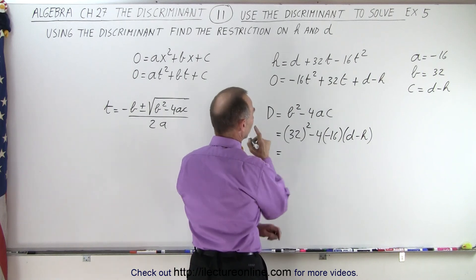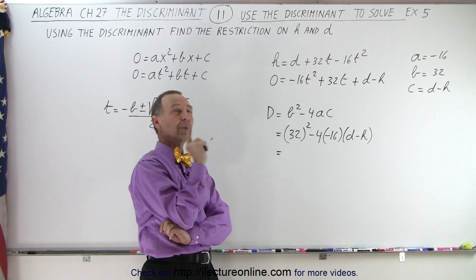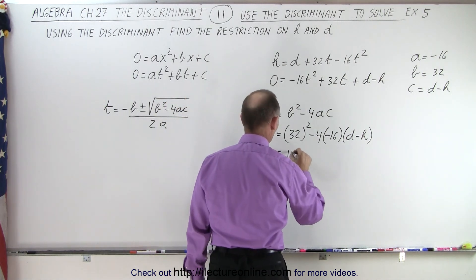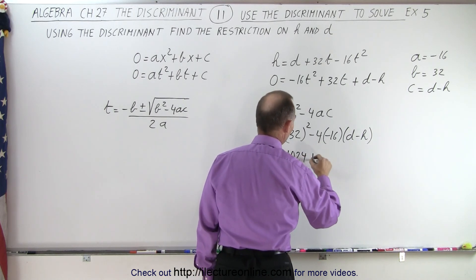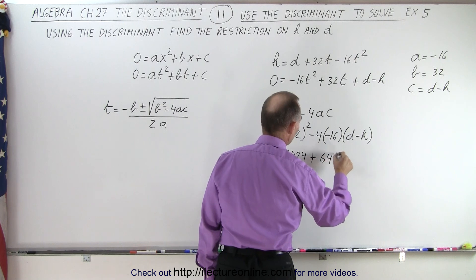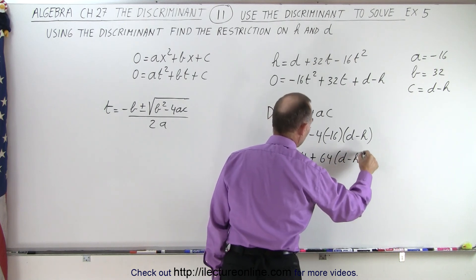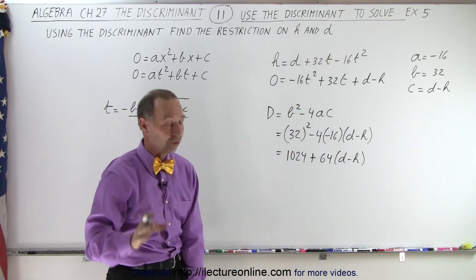So this would be equal to 32 squared, that's 1024, minus times minus, that's plus 64 times d minus h. And notice that there's a restriction here.